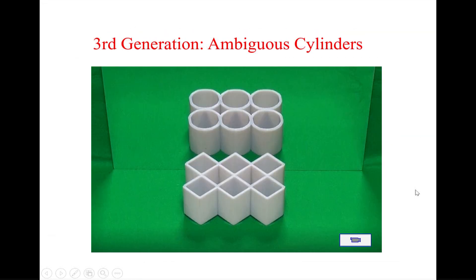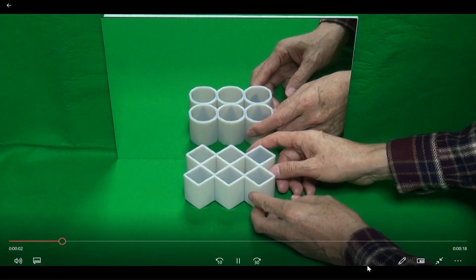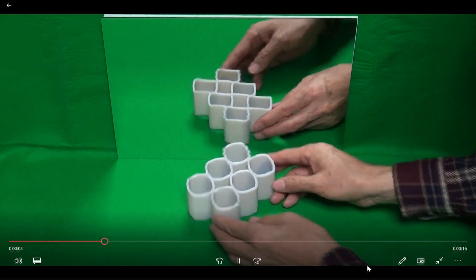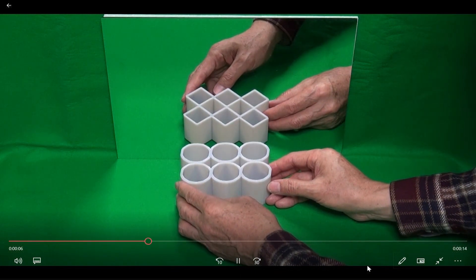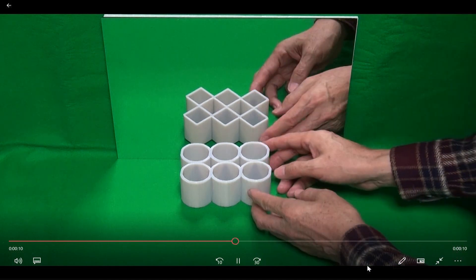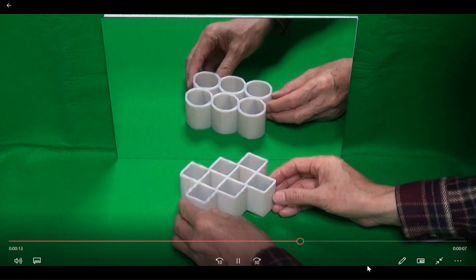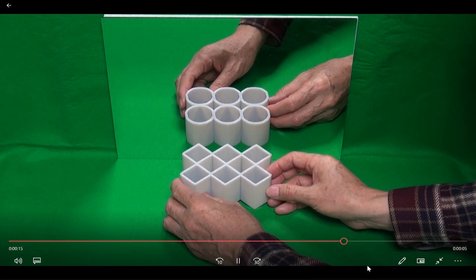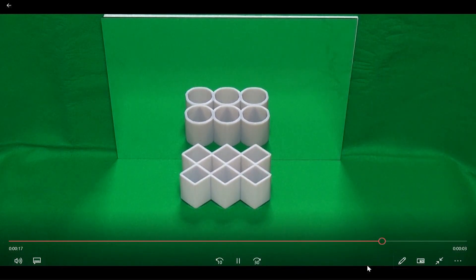The third generation is the ambiguous cylinders, in which the direct view of the object and its mirror image differ completely. It's just an optical illusion. This is the third generation of my impossible objects.